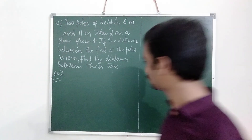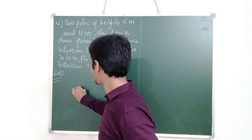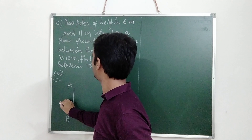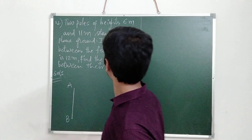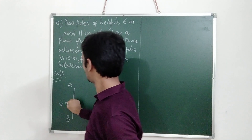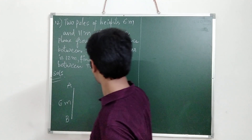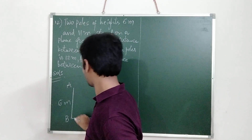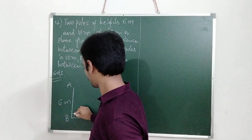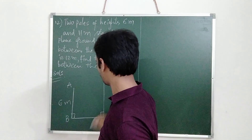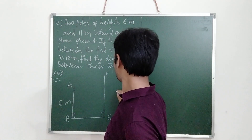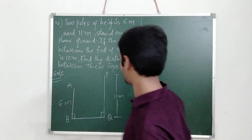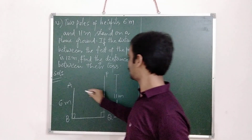Let us consider the two poles as AB and PQ. Let AB be this pole of height 6m and the second pole PQ is of height 11m. This is the level ground, and the angles at the base are 90 degrees.